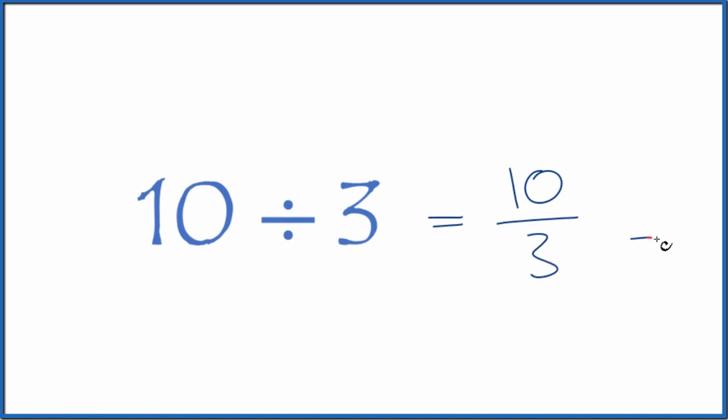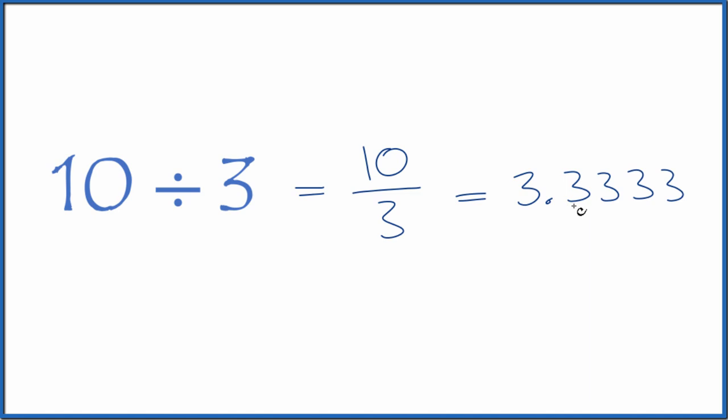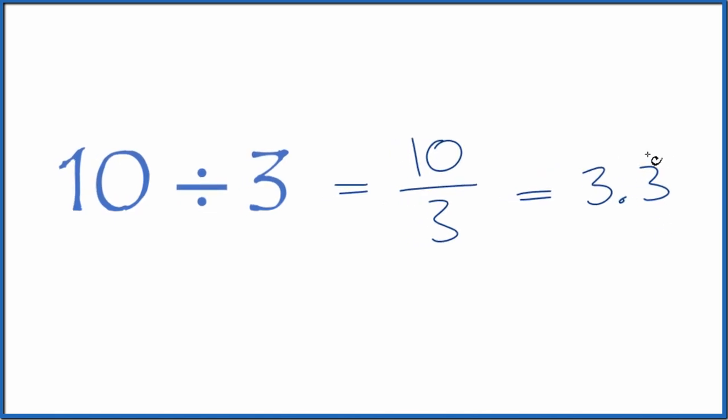You could also do this on a calculator. You end up with 3.3333. The 3s, they just keep repeating. So why don't we get rid of these, and then we can put a bar over that 3 to show that the 3s repeat. So 10 divided by 3 equals the fraction 10 thirds. Or you could have 3.3 with the 3s repeating.